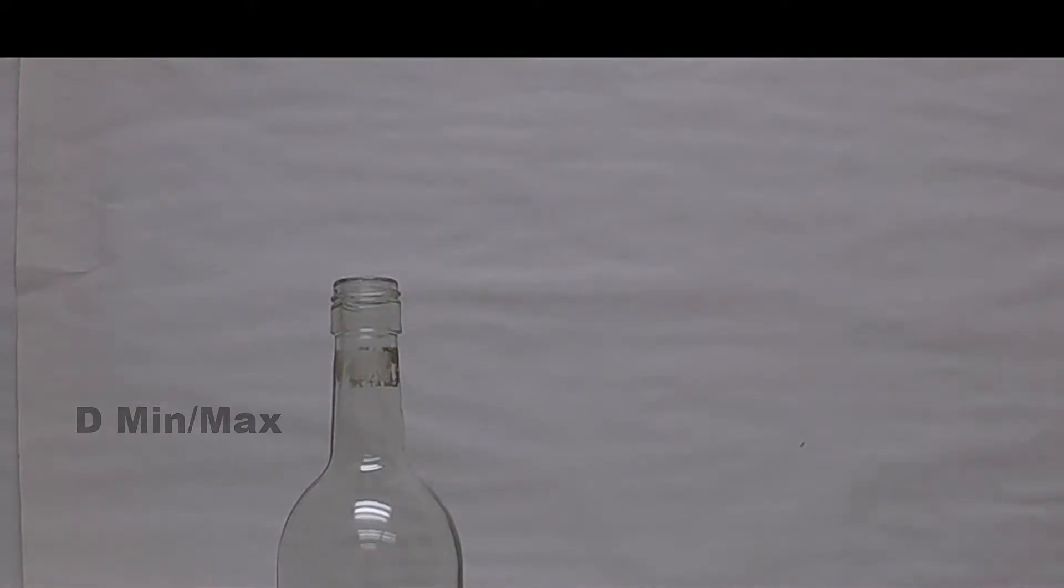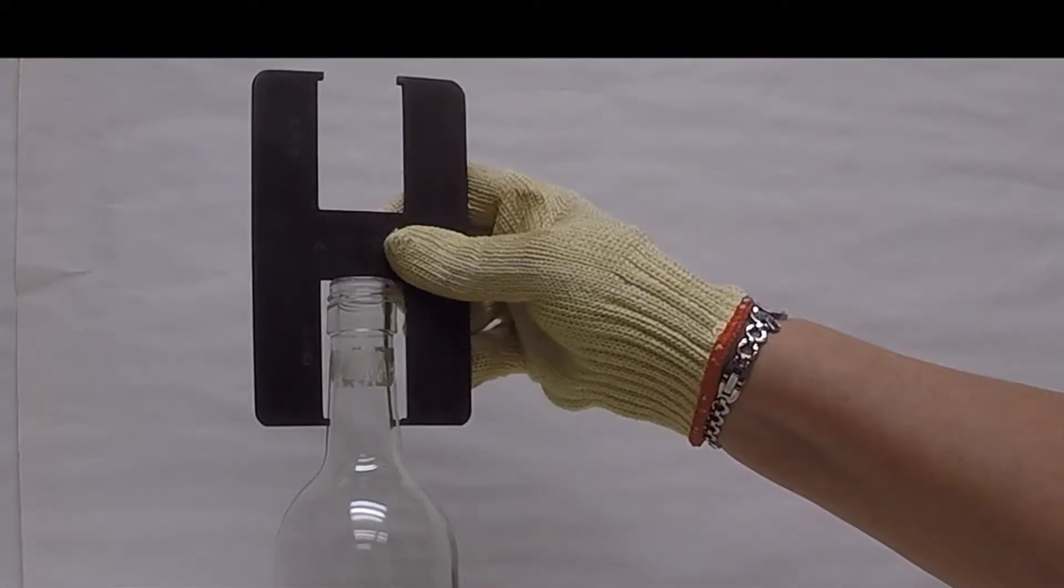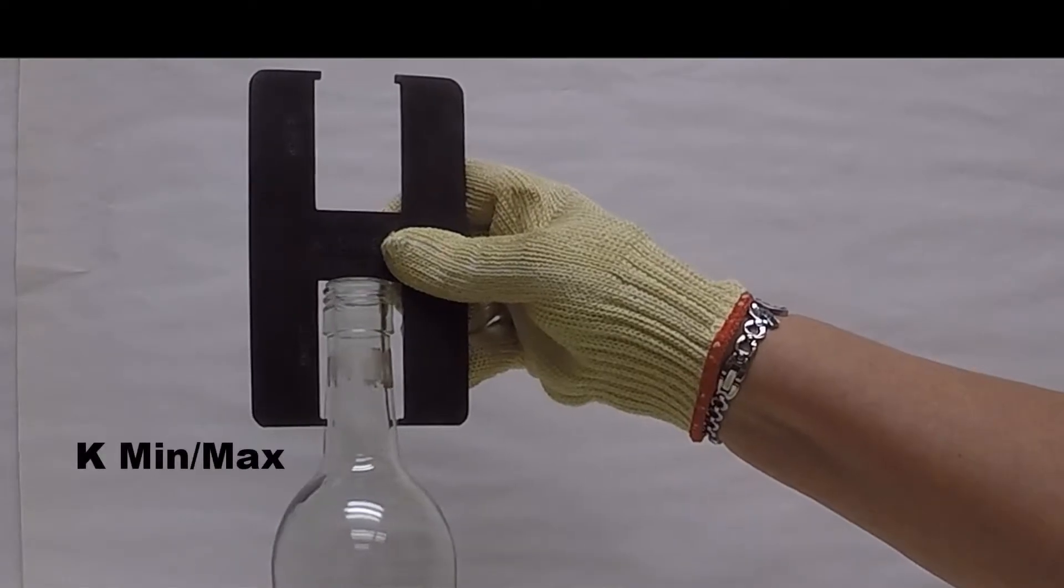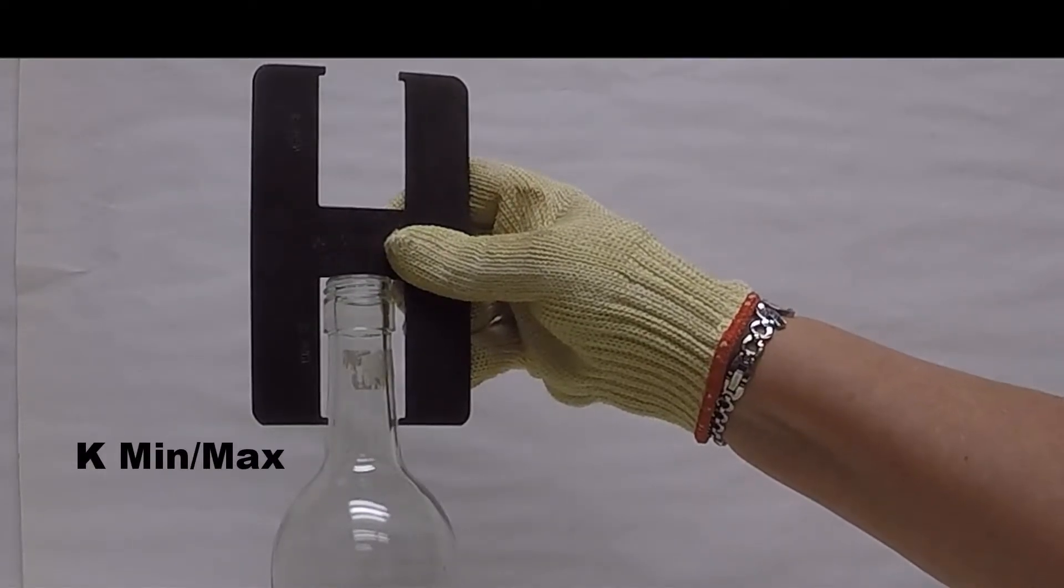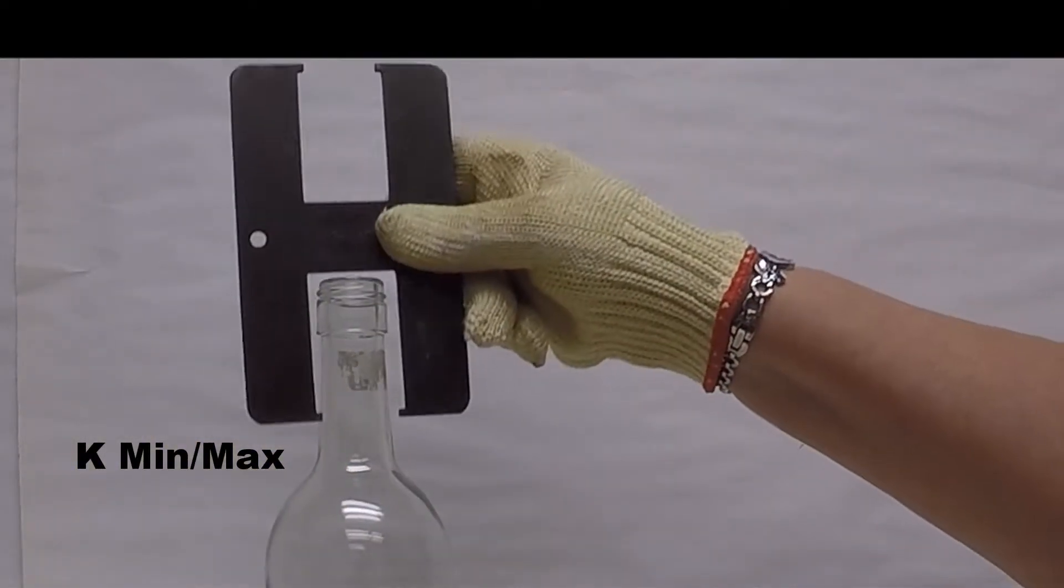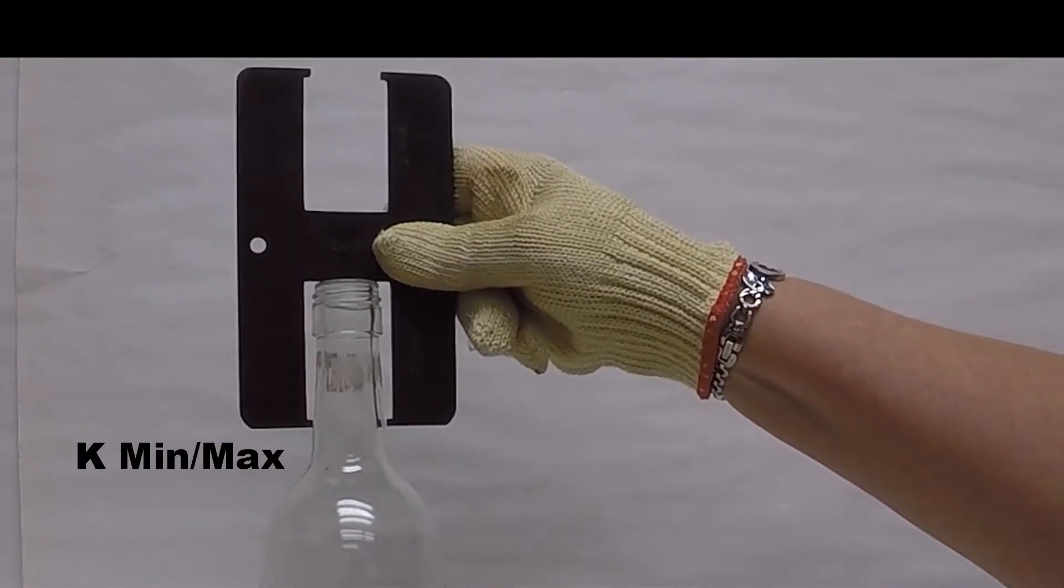Next gauge is the K gauge, which measures the neck. K min gauge, as you're rotating the bottle, should not go over the neck. K max, as you're rotating the bottle, should.